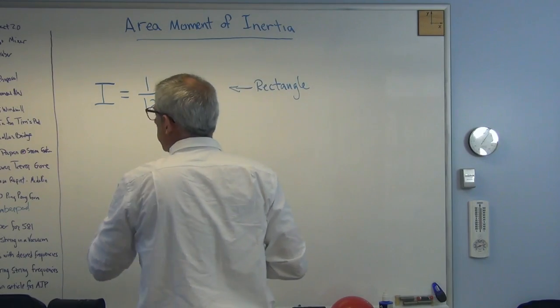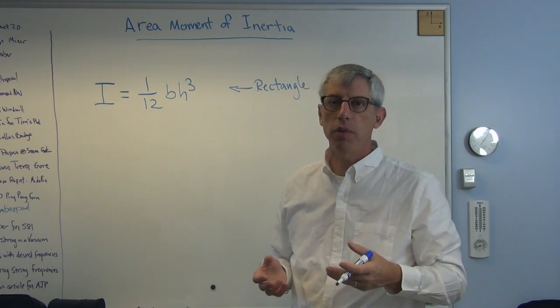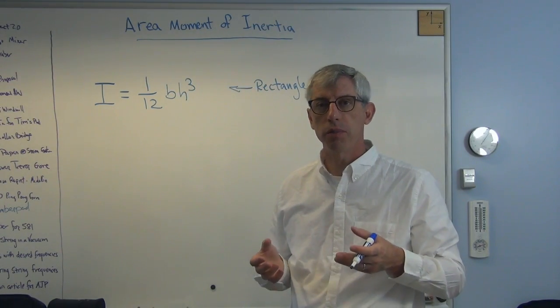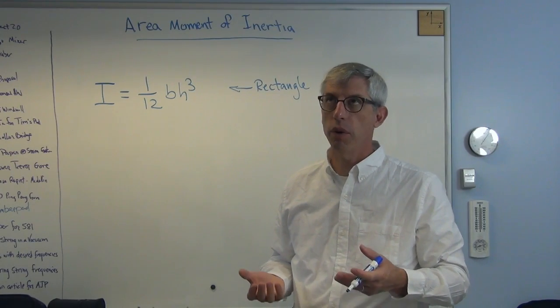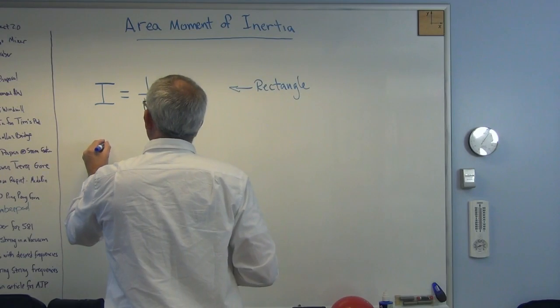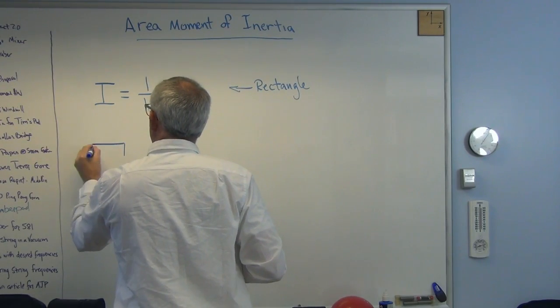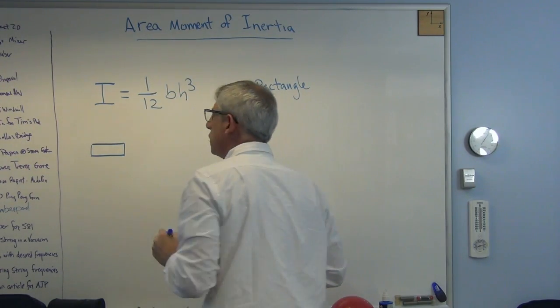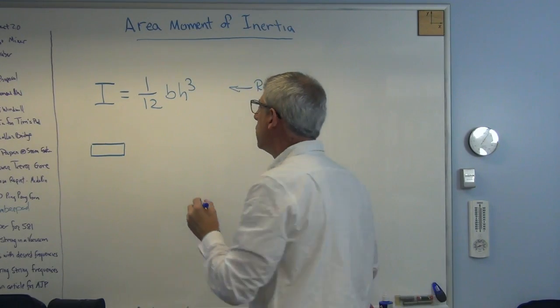So think about a 2x4. Now, in the old days, they were called 2x4s because they were actually 2 inches by 4 inches. They're not anymore. They're 1.5 by 3.5, if you're lucky. So let's figure out the area moment of inertia of a 2x4 that's laying down.